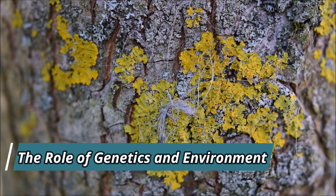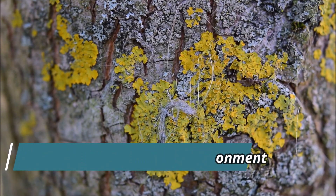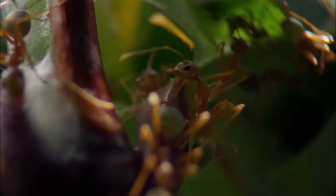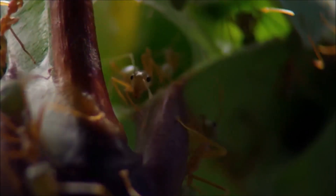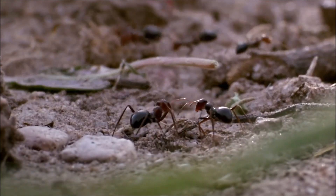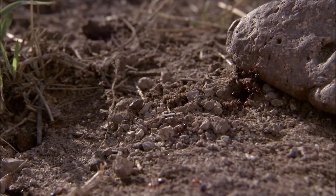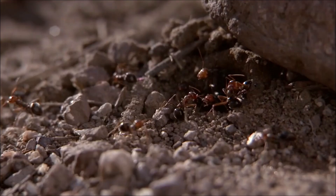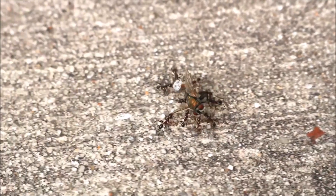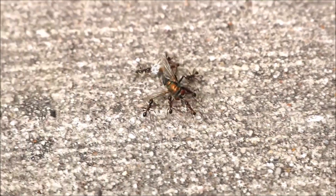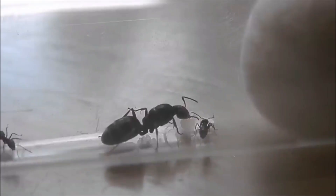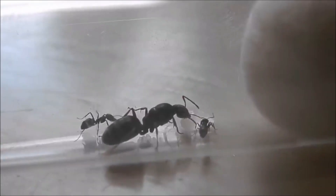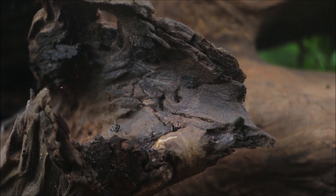The cooperation and communication within ant colonies are influenced by a combination of genetic and environmental factors. The genetic makeup of ants can predispose them to certain roles or behaviors within the colony. For instance, some ants may have a genetic predisposition to be better foragers or defenders. However, environmental factors, such as the availability of resources or the presence of predators, can also shape the behavior and division of labor within the colony.